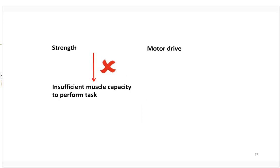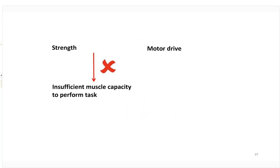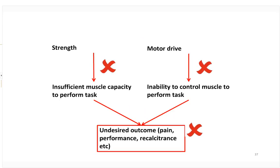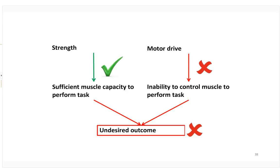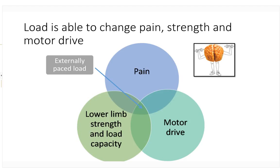To summarise and put it all together: a completely passive intervention like an injection into the tendon has not changed their strength or muscle drive — we cannot be surprised it's not a magic bullet. A load-based intervention without understanding neuroplasticity and pacing it may lead to recurrence or recalcitrance. These tendons are really difficult to treat. We advocate addressing all of these things by using externally paced load — a metronome while they exercise — to capitalise on strength, pain reduction, and motor drive changes simultaneously.